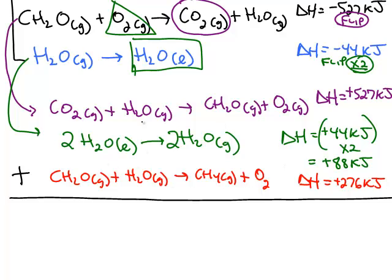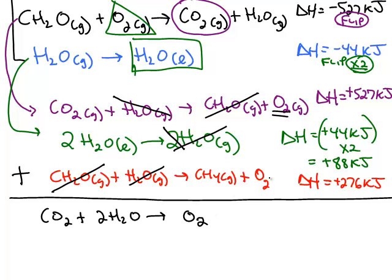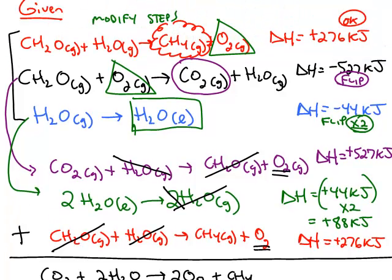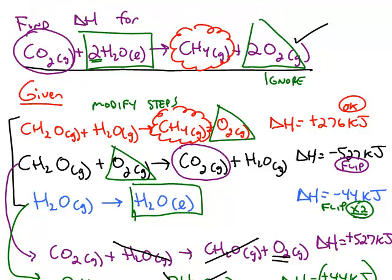And in this example, we can cancel out some things. We have the same chemical on the product side and the reactant side. It has the same coefficient, so it'll cancel. We have H2O in the gas state and we have two H2O in the gas state, so that'll cancel one of them. And then we have another H2O that'll cancel there. What we have left is carbon dioxide plus two water makes oxygen, and we have one oxygen in one step and another giving us a total of two oxygens, and we have methane. That matches the overall reaction that we were looking for.